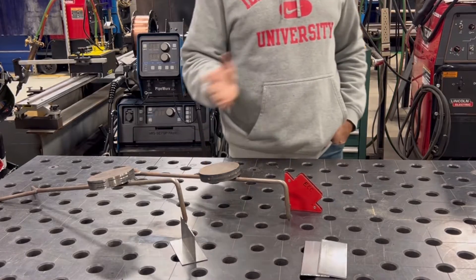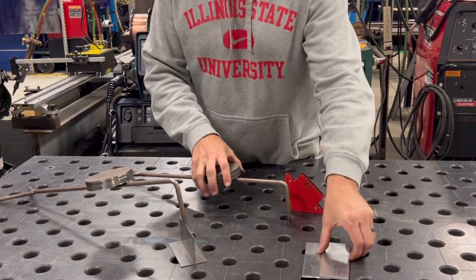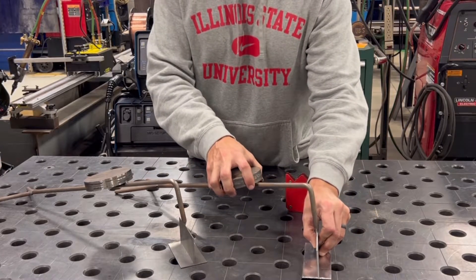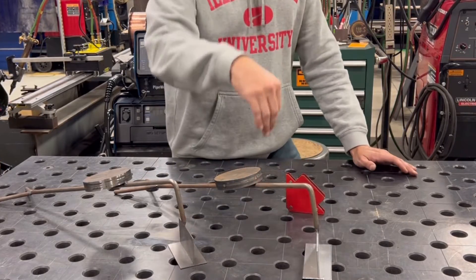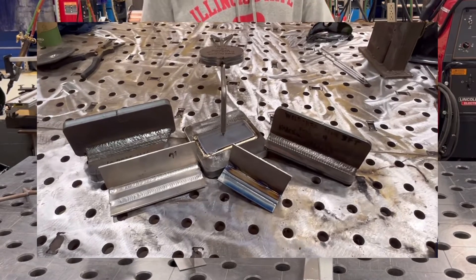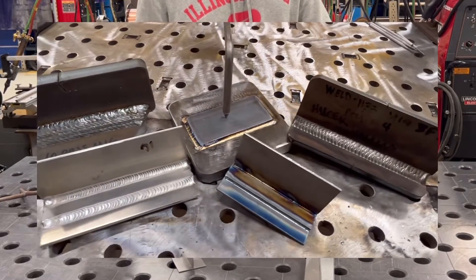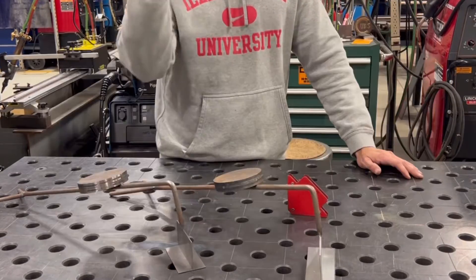It's just a weighted arm that comes up with a finger, and then I sharpen the point on it so it'll actually stick to the metal and grab onto it. This is sixteenth inch and it's holding it up great.